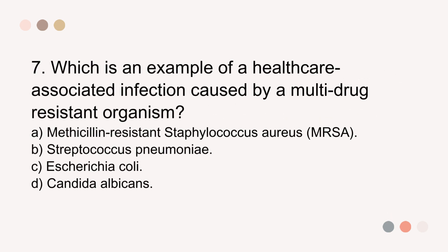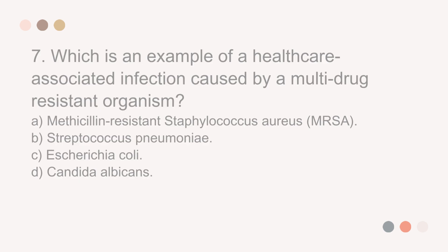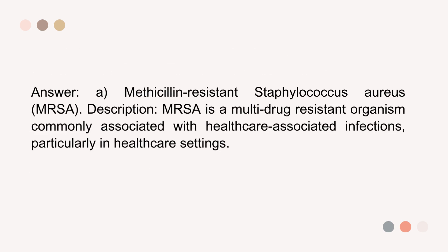Question 7. Which is an example of a healthcare-associated infection caused by a multidrug-resistant organism? A. Methicillin-resistant Staphylococcus aureus (MRSA). B. Streptococcus pneumoniae. C. Escherichia coli. D. Candida albicans. The answer is A. MRSA. Description: MRSA is a multidrug-resistant organism commonly associated with healthcare-associated infections, particularly in healthcare settings.